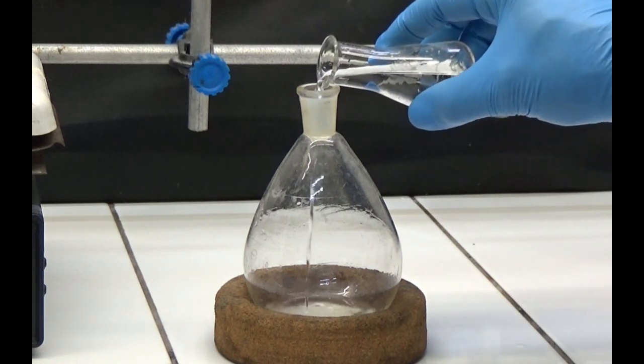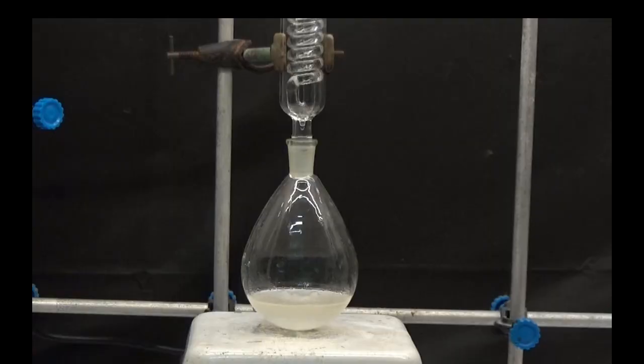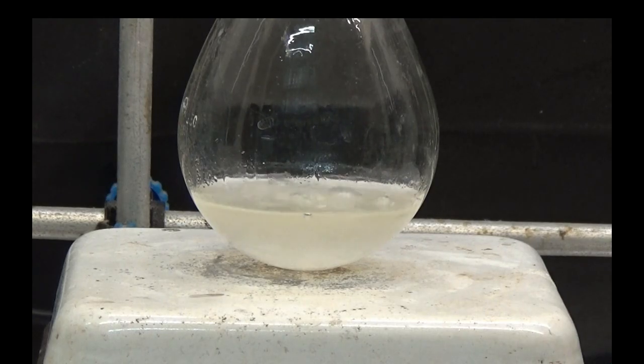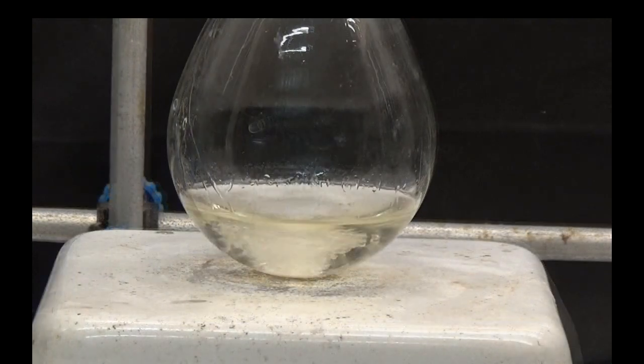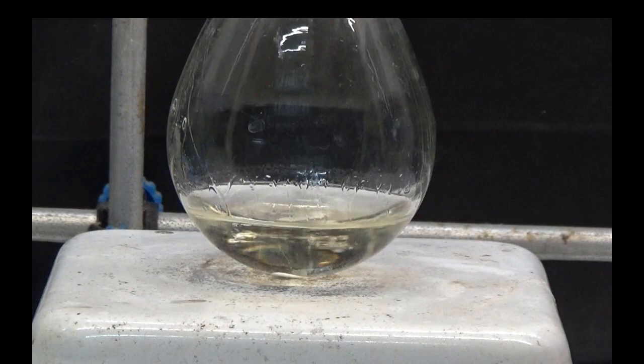Heat the residue under reflux with acetic acid solution. The reflux is stopped when the bonded layers are yellow, the reflux lasted about 4 hours.